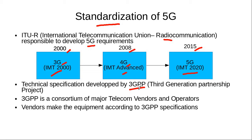This consortium, 3GPP, basically uses these 5G requirements and then develops the technical specifications of the system that would meet those requirements — like which modulation scheme this system would use, which radio protocol, or which data protocol in order to meet those requirements.